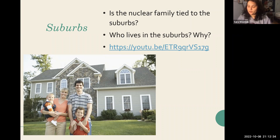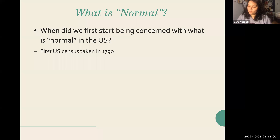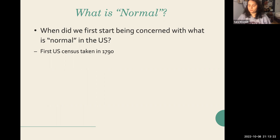As you could see from the video, for many, the American Dream of being able to start their own family in the suburbs is very unattainable. This brings up the question of what is 'normal,' and when did we first start being concerned with normalcy in the U.S. The U.S. first started keeping track of its demographics in 1790, but the U.S.'s preoccupation with normalcy spans far beyond this. Through U.S. history, gender roles have come to be associated with certain tasks, and these cultural values have been imposed on marginalized groups by white people.